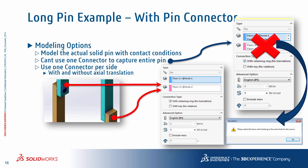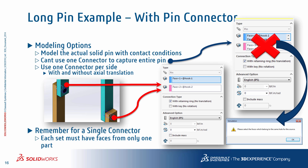Our alternative option is to use one pin connector per side. While the holes on each side must remain concentric, the connected parts can deform independently of each other, as a real pin would about its center. To account for that behavior, we can turn off the axial translational constraint in the pin connector definition. Remember, for a single connector, each selection box must have faces only from one part.